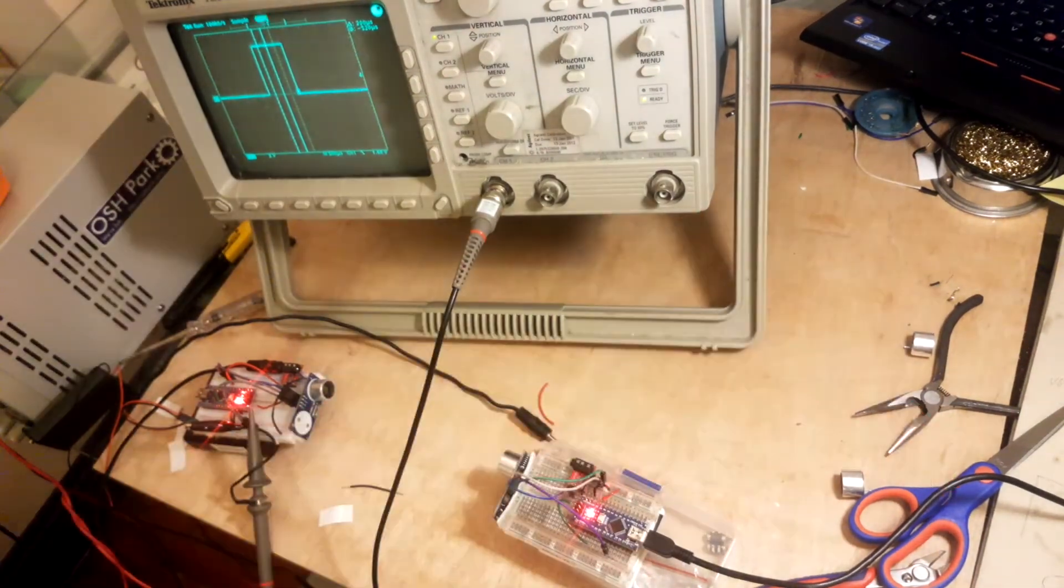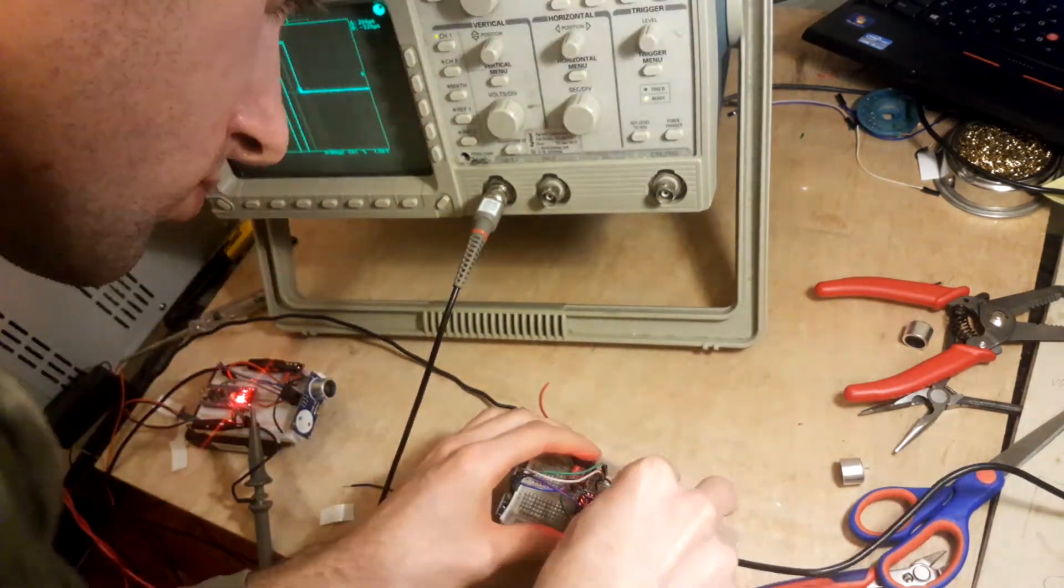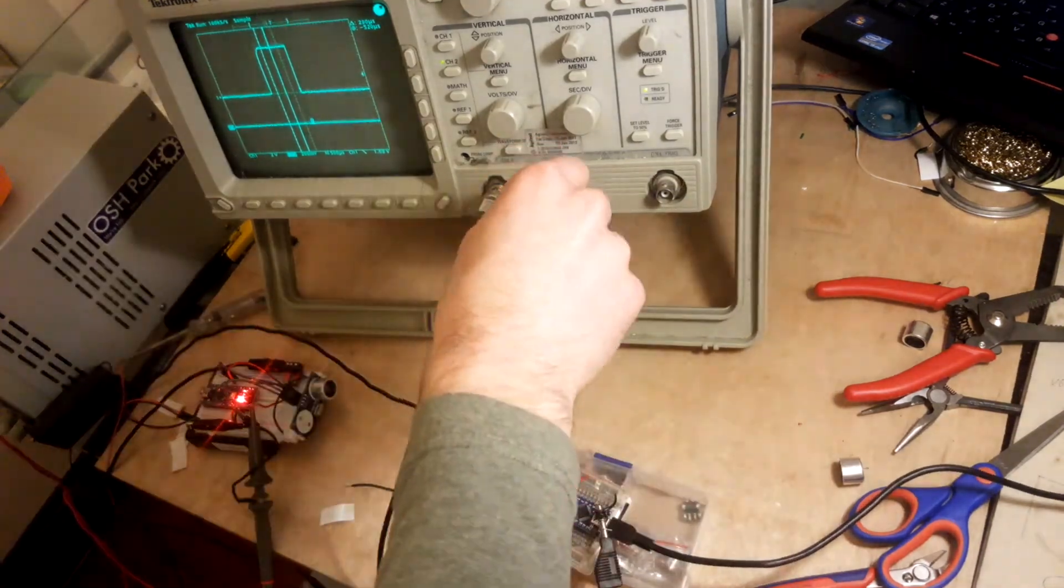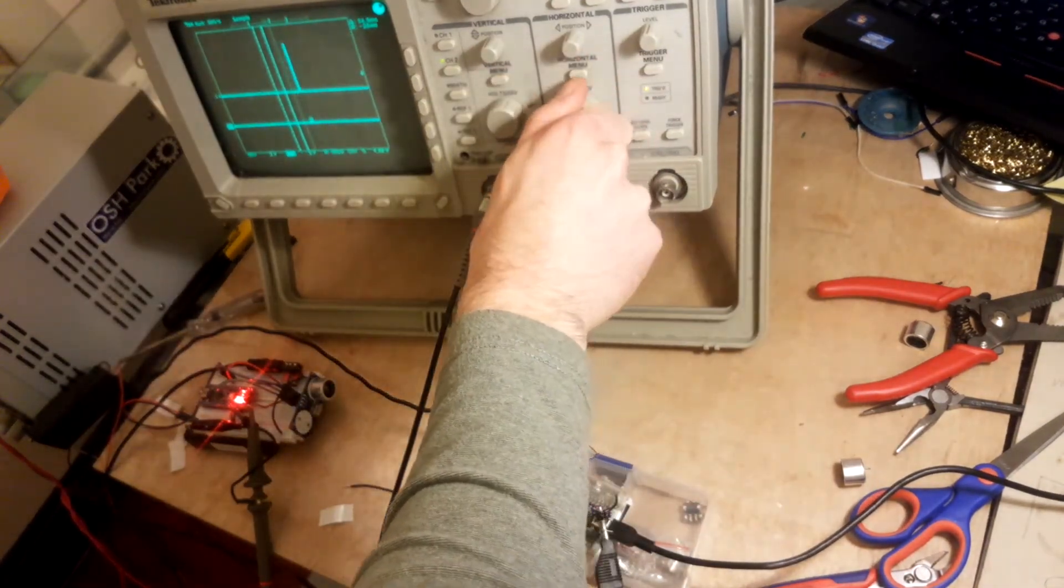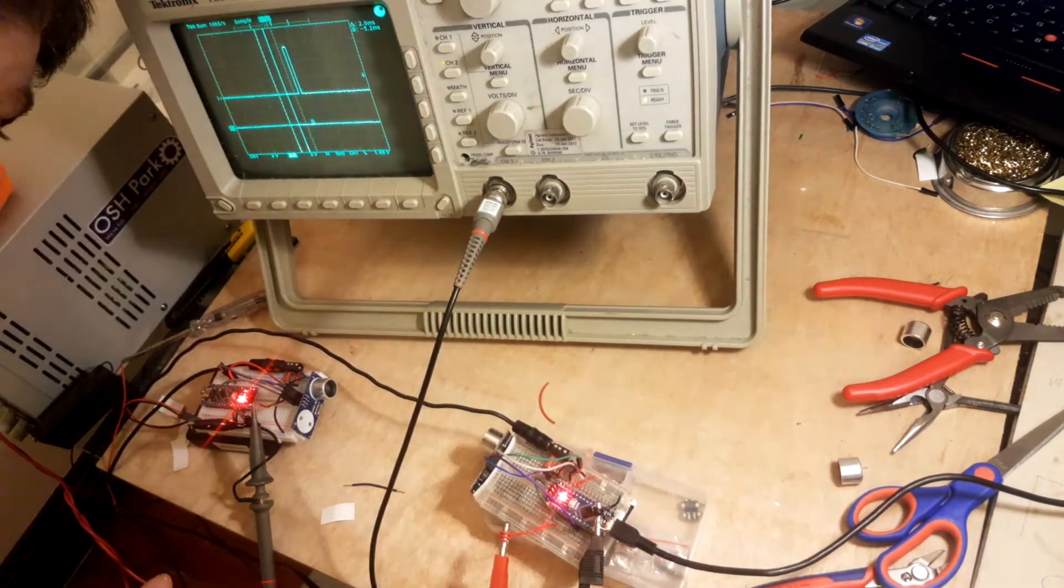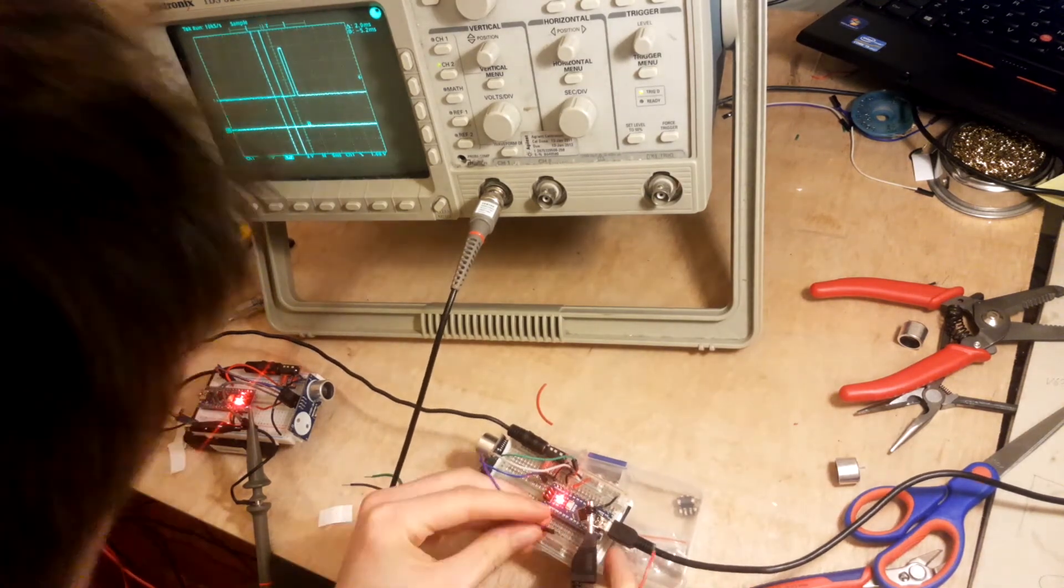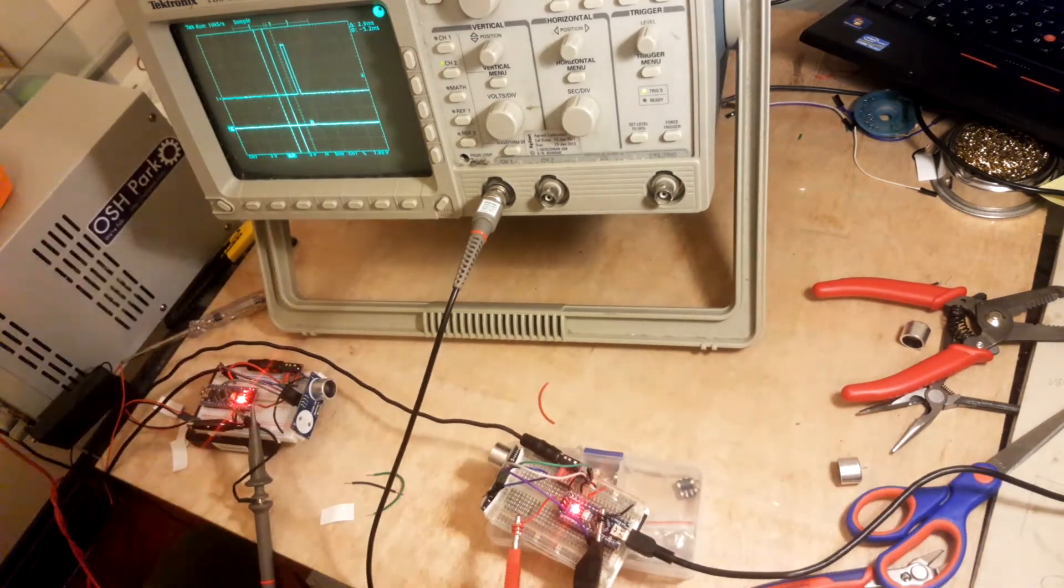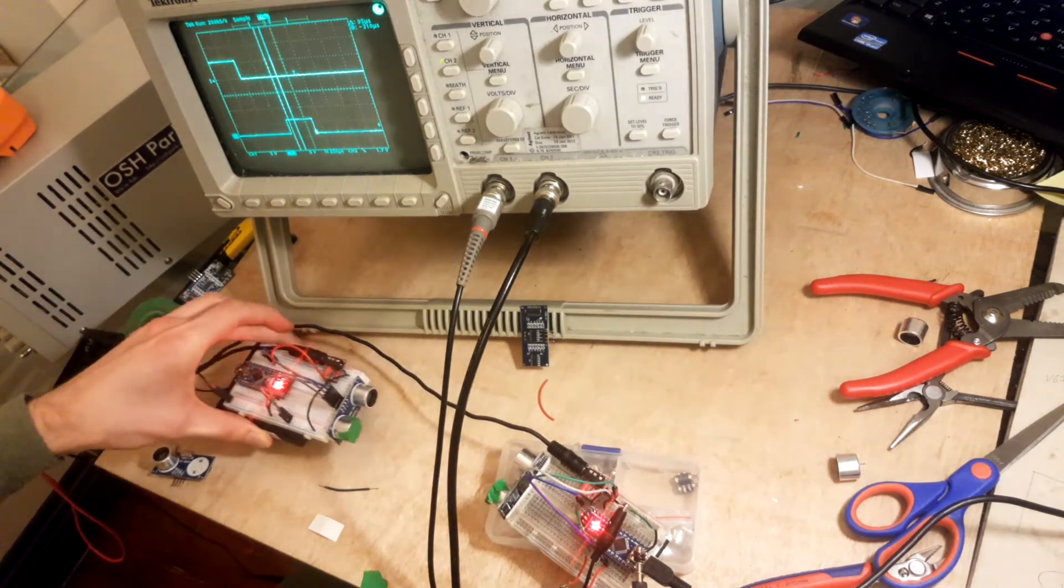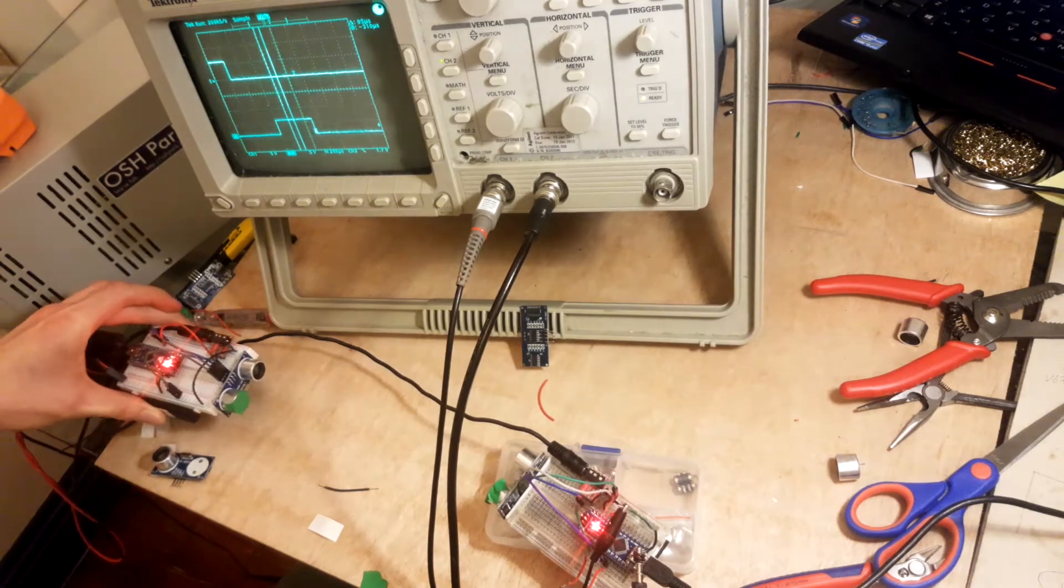I actually removed one of the transducers from each of the HC-SR04s. I'm not really sure why I did this—I kind of like taking stuff apart. It turns out that removing them stops them from working altogether. I eventually just ended up using two new sensors and putting tape over the transmitter on one and the receiver on the other.